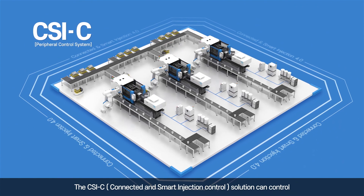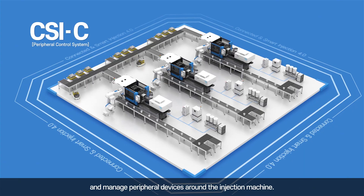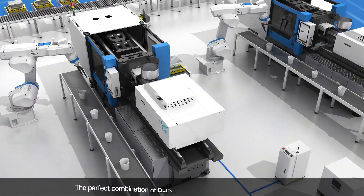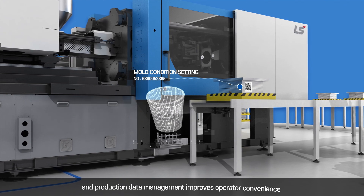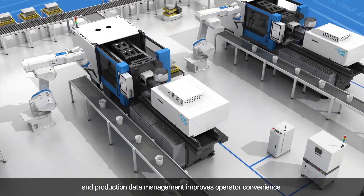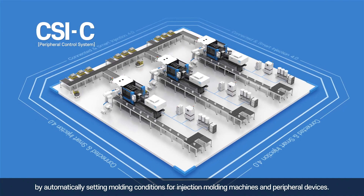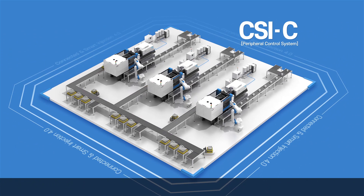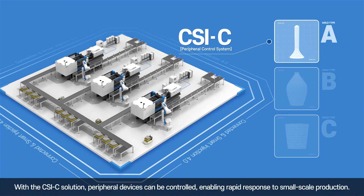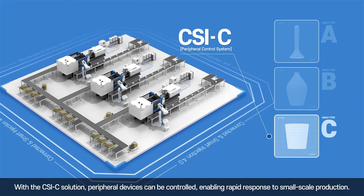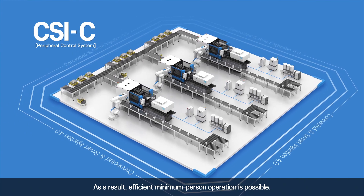The CSIC solution can control and manage peripheral devices around the injection machine. The perfect combination of RFID and barcode mold recognition function and production data management improves operator convenience by automatically setting molding conditions for injection molding machines and peripheral devices. With the CSIC solution, peripheral devices can be controlled, enabling rapid response to small-scale production. As a result, efficient minimum-person operation is possible.